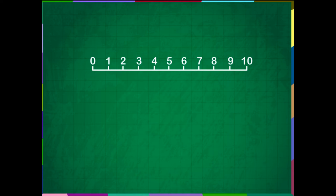Observe the number line shown here. It has numbers from 0 to 10. With the help of this line, we can subtract two numbers easily.